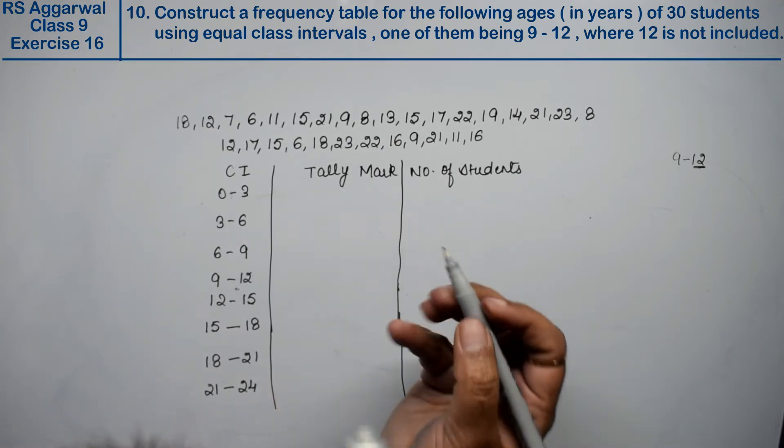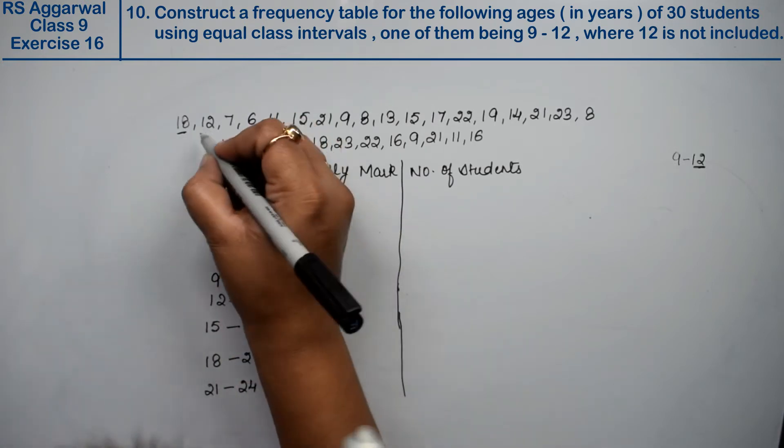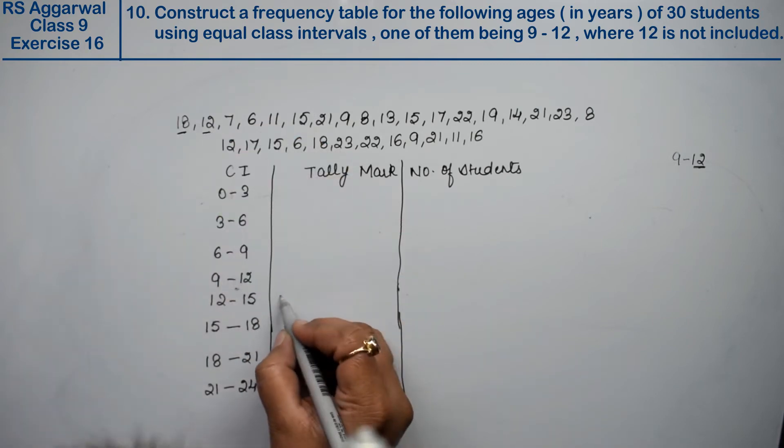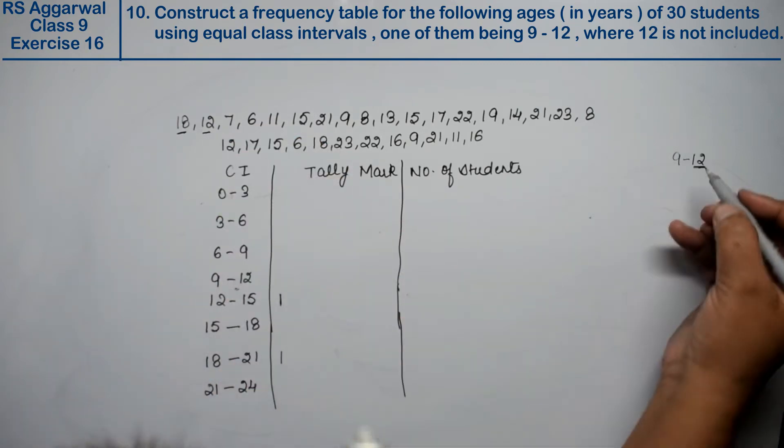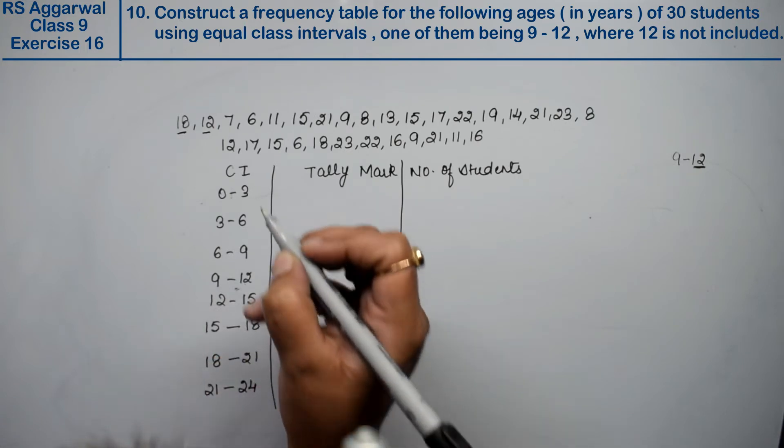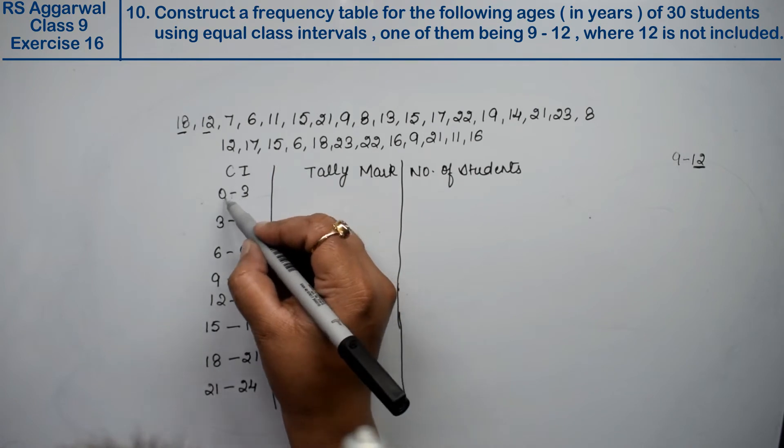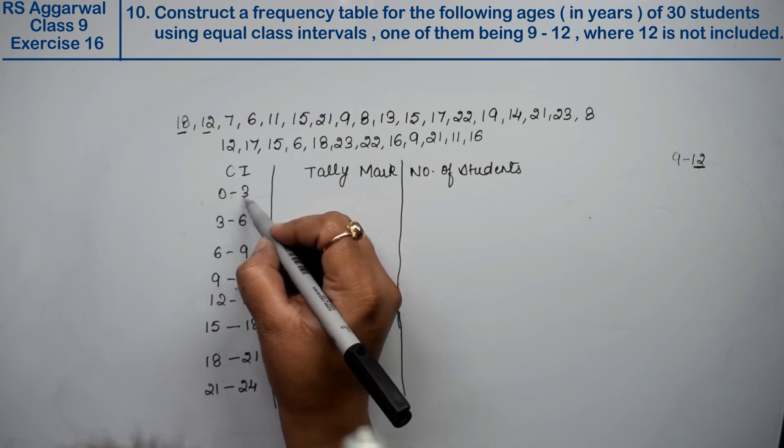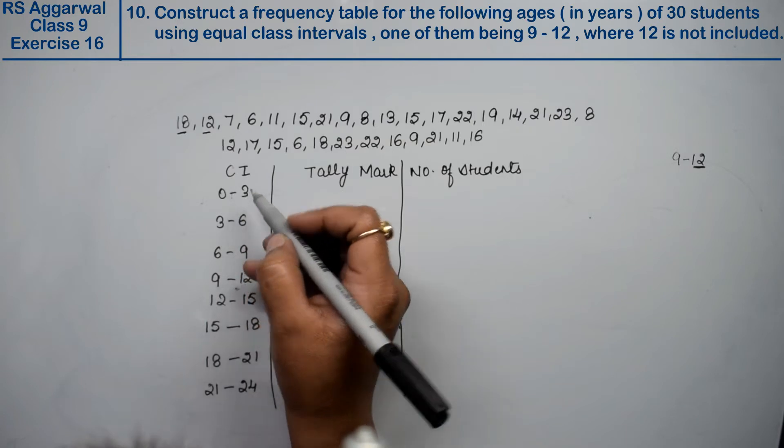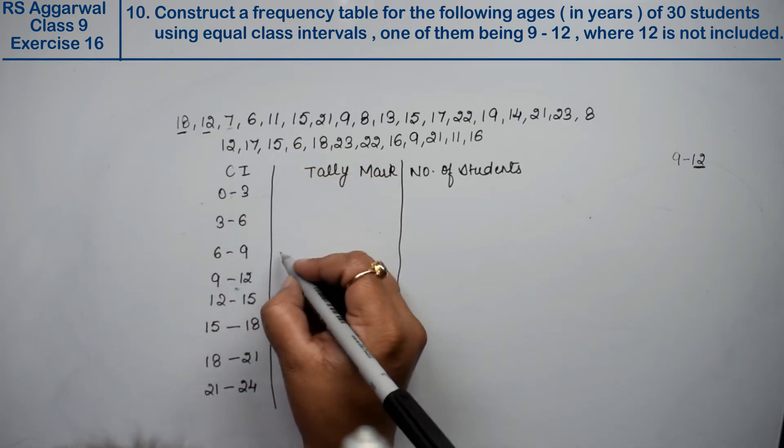Now let's see. First we have 18. Where will you put 18? 18 to 21. Next is 12. Where will you put 12? 12 to 15. Why? Because 12 is not included in the 9 to 12 interval, so it will be included here. If there is 0 to 3 interval, then 3 is not included, but there is 0, 1, and 2. So 7, where will you include? 6 to 9.